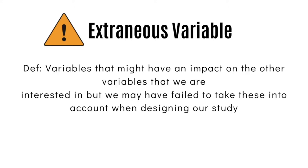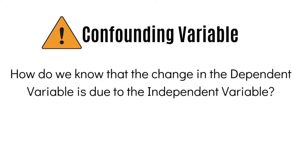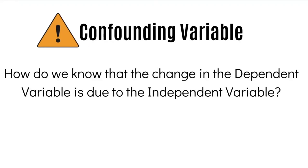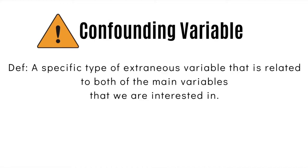We do not go into much detail about extraneous variables, which can be a topic for a separate video, but we talk a little bit about a specific type of extraneous variable referred to as confounding variables. Confounding variables basically force us to answer this question: how do we know that the change in the dependent variable that we observe is caused by or as a function of the independent variable? Confounding variables can be defined as a specific type of extraneous variable that is related to both of the main variables that we are interested in.